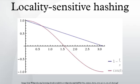Min-wise independent permutations: Suppose U is composed of subsets of some ground set of enumerable items S and the similarity function of interest is the Jaccard index J. If π is a permutation on the indices of S, for let. Each possible choice of π defines a single hash function H mapping input sets to elements of S.